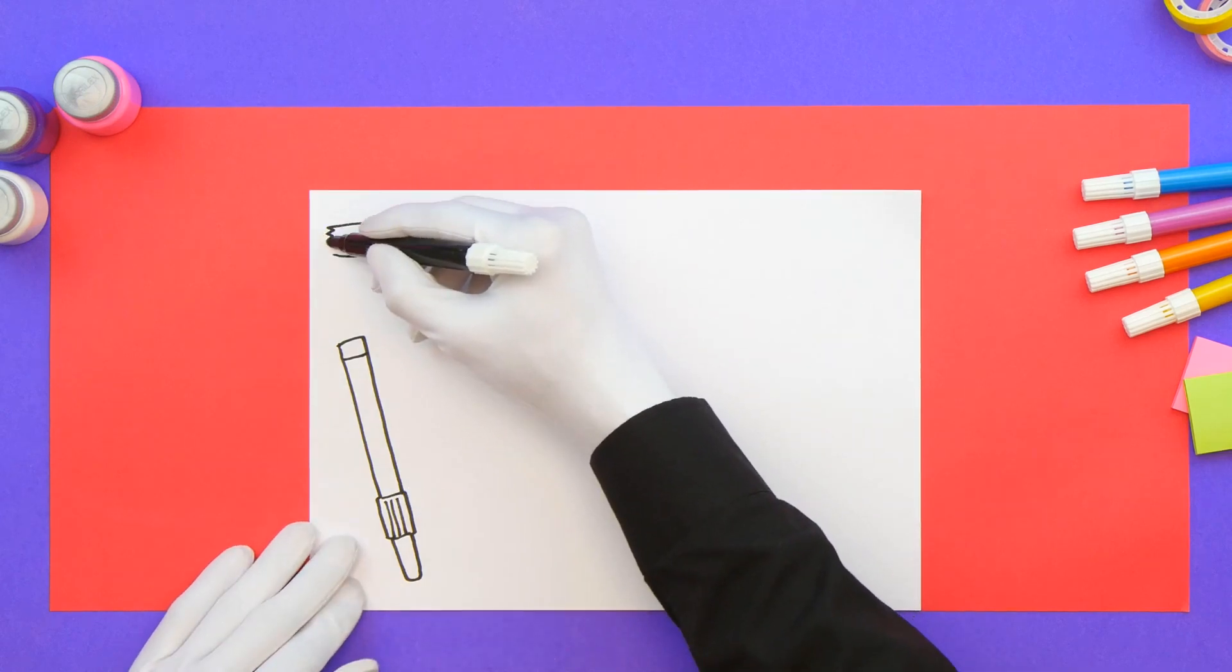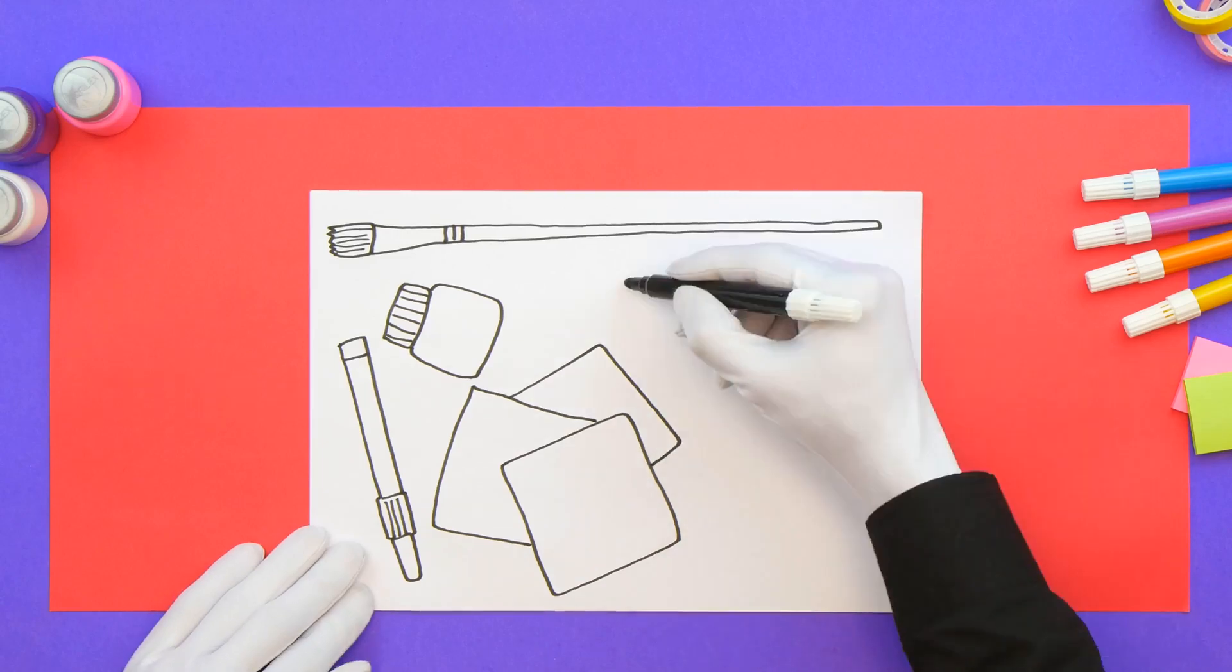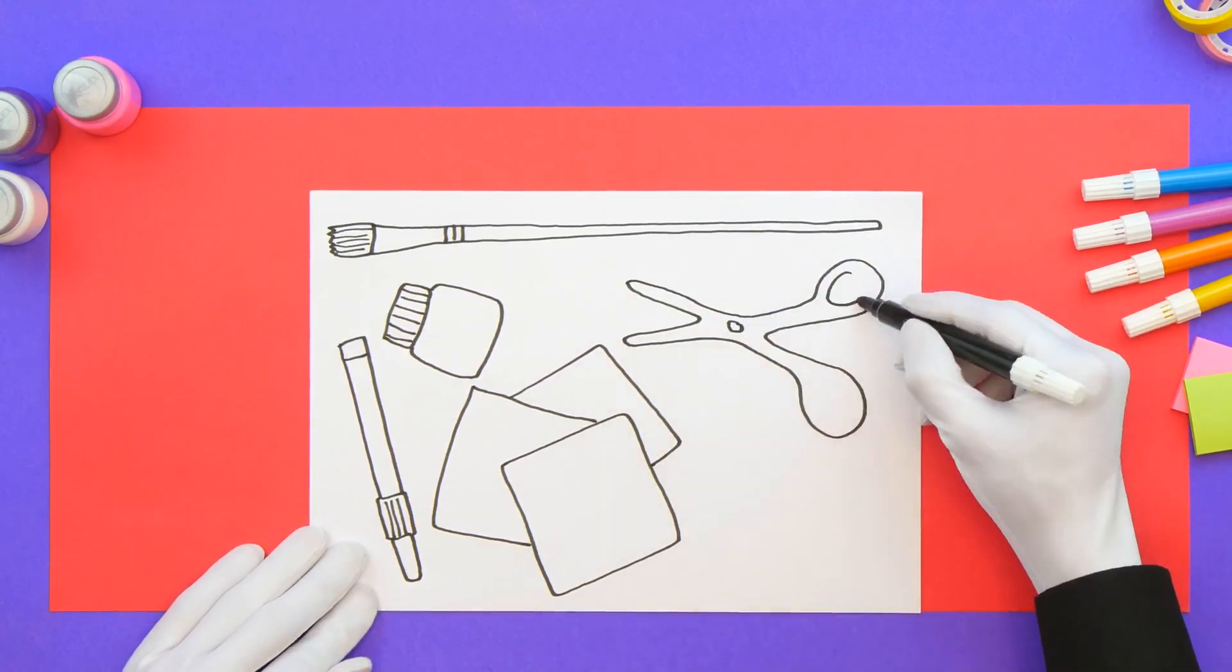And what are we going to need to do that? Colored pens, a brush, paint, colored paper, blunt scissors, and glue.